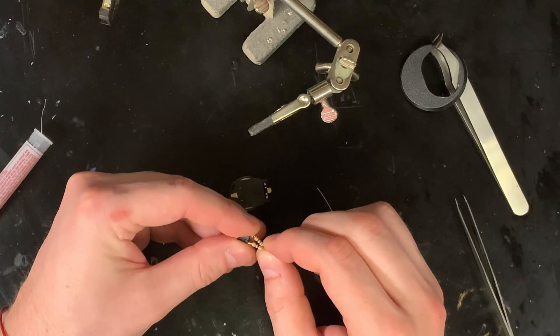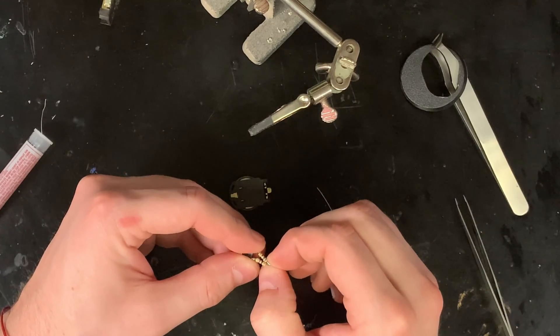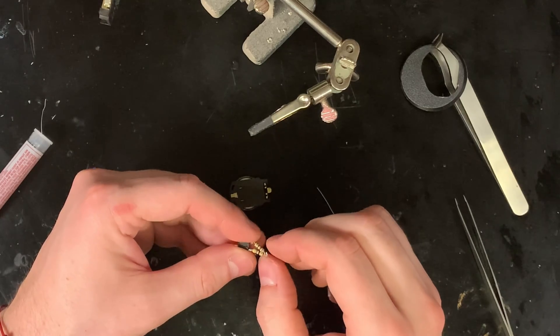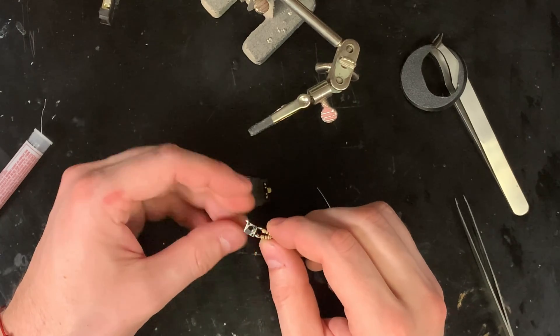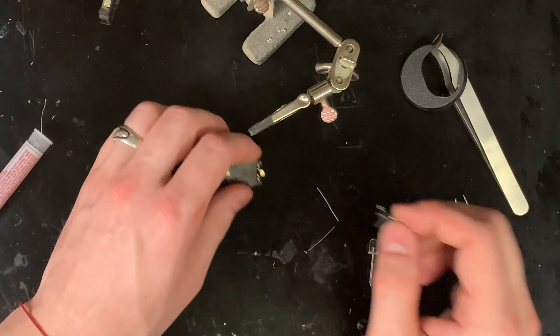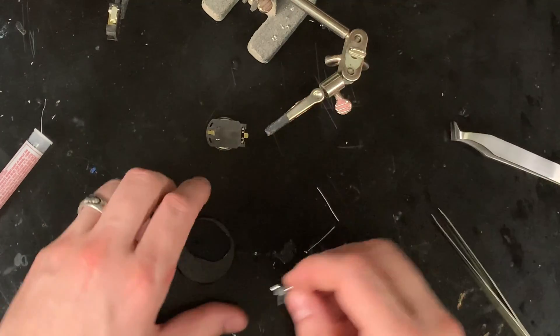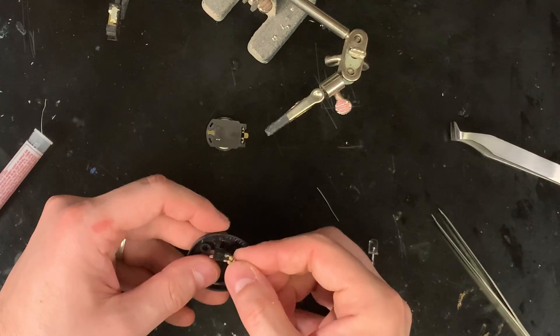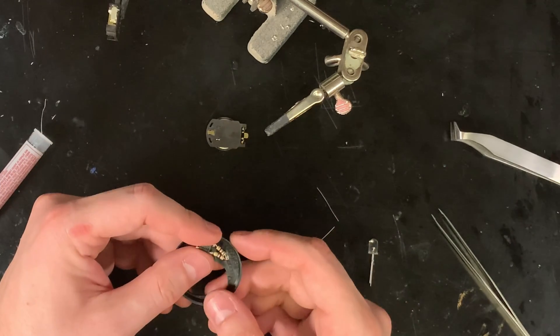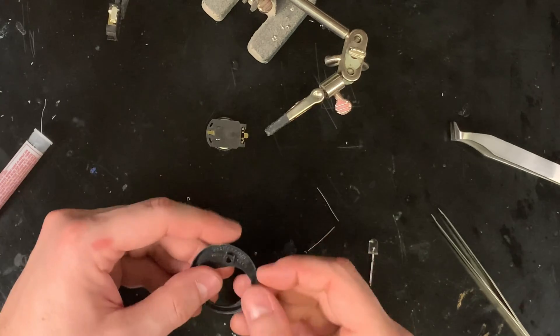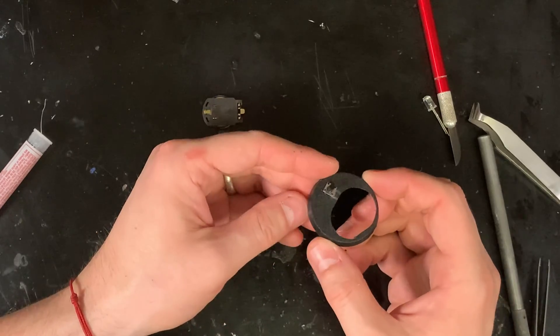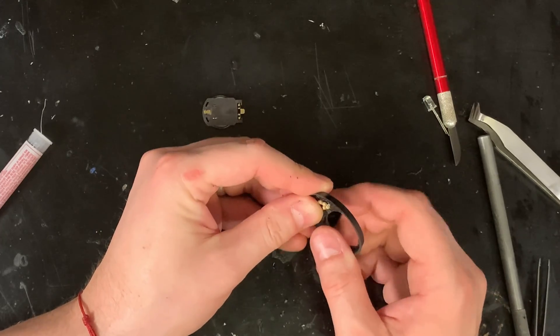So with these tactile switches, the legs in line with each other actually have a hard connection. The legs across from that line will be connected when the button is pressed. So I've hooked up the 470 ohm resistor in line. So that will always be connected when this is on. And then I've hooked up the 68 ohm resistor on the other leg. So when I press the button, we will get 59.4 ohms across it because of the parallel resistors.